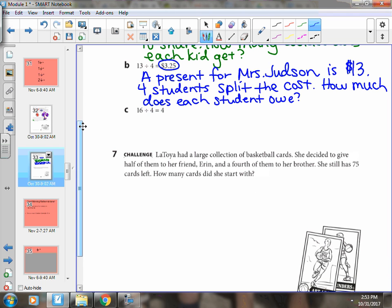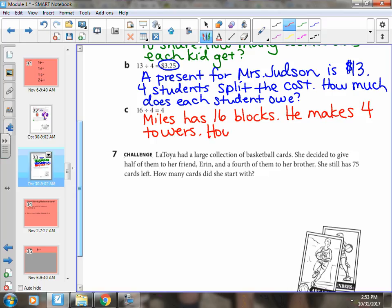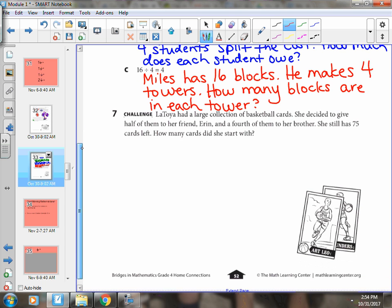Letter C works out evenly, and the fact that there is no remainder means the problem could really be about anything. Let's see. Miles has 16 blocks. He makes four towers. How many blocks are in each tower? 16 divided by four is four. I think the next question would be, how long will the tower last before it gets knocked over?